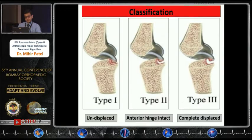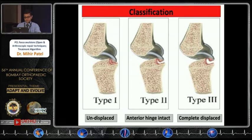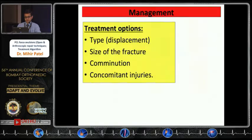The classification parallels ACL avulsion: Type 1 is undisplaced; Type 2 is where the anterior hinge is intact and displacement is only posterior; Type 3 is completely displaced. Management depends on the type — specifically the displacement of the fracture fragment, the size of the fragment, the degree of comminution, and concomitant injuries.